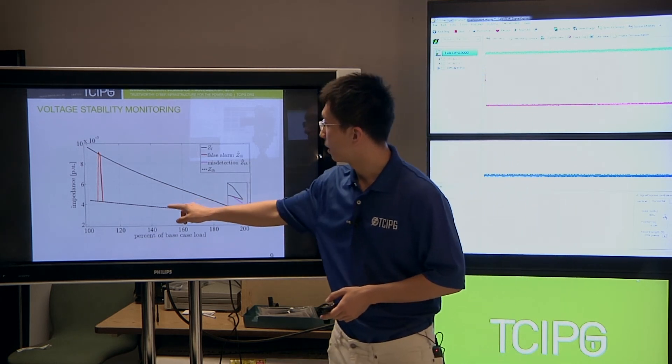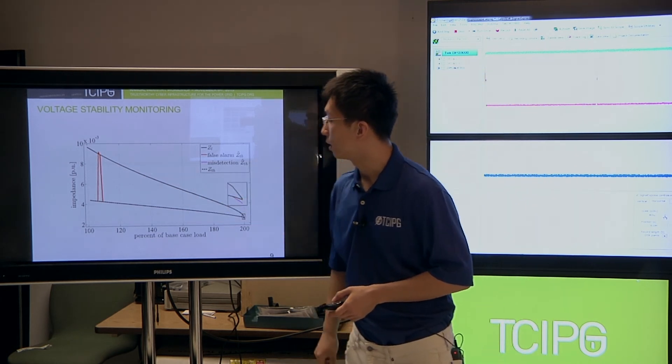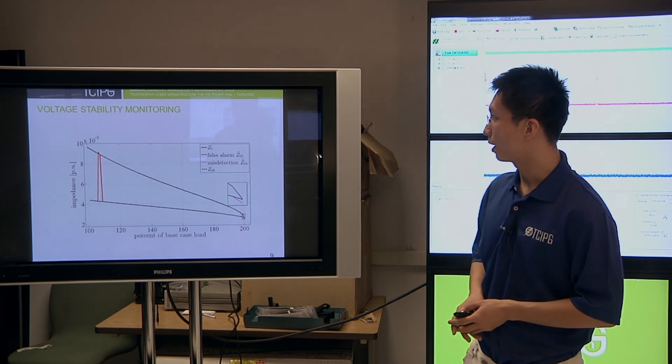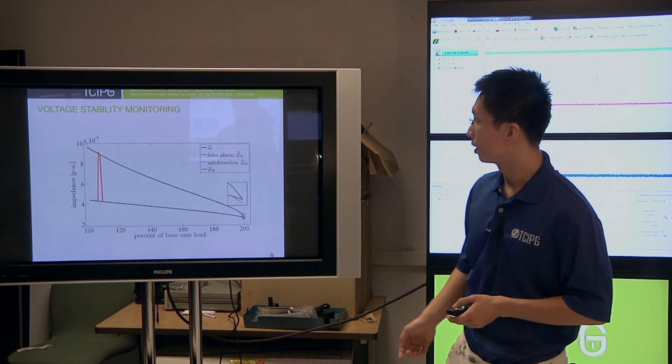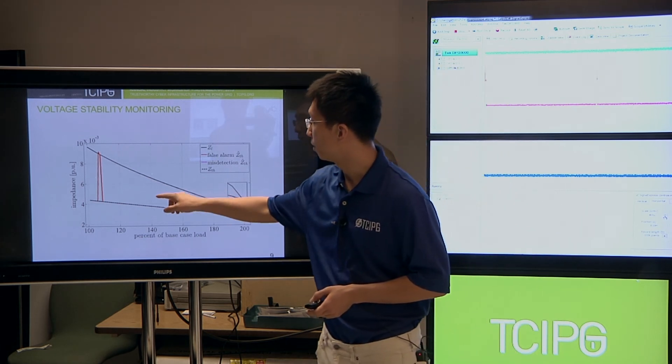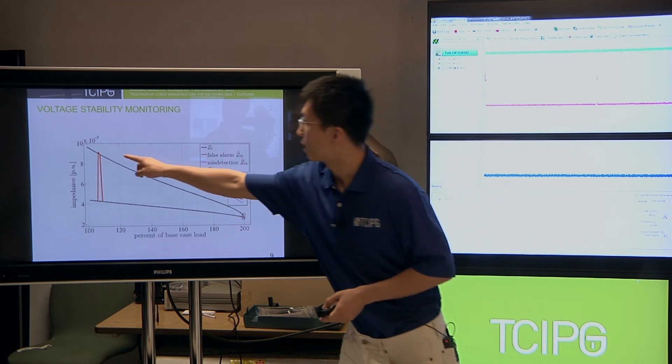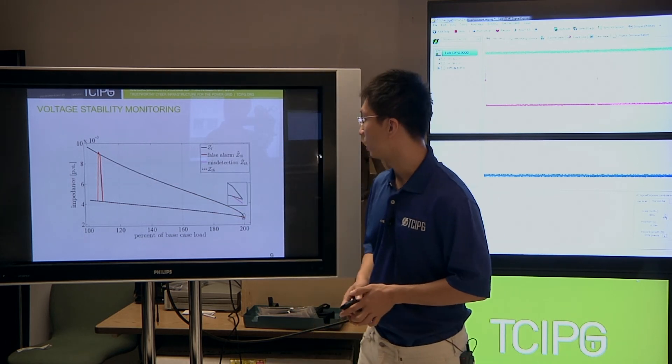However, when the Thevenin impedance becomes larger than the load impedance, then the system is actually deemed unstable. So by spoofing it in a particular way, we could allow this algorithm to compute a Thevenin impedance that is greater than the load impedance, which is right here, and you see that that introduces a false alarm.